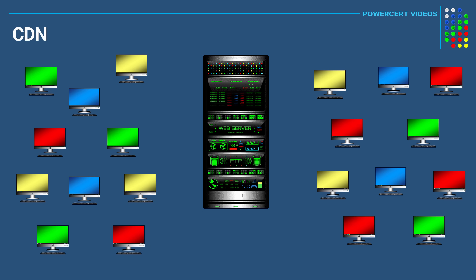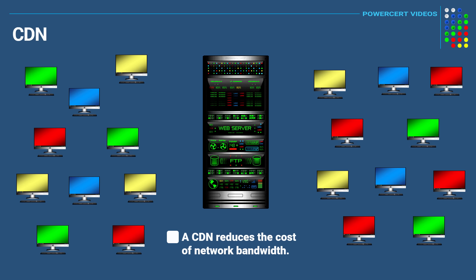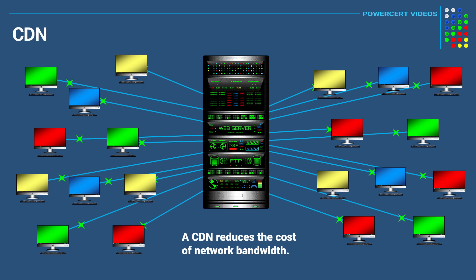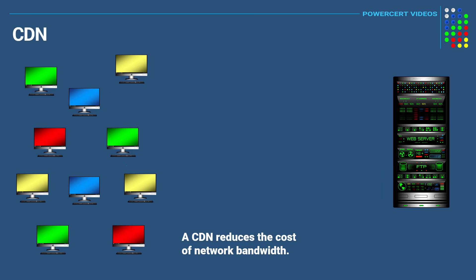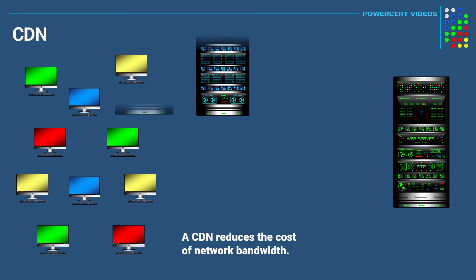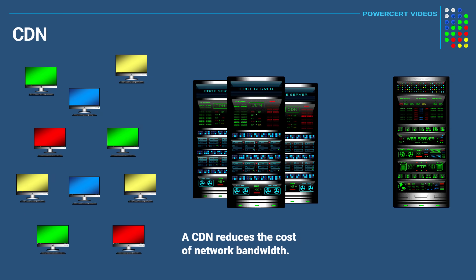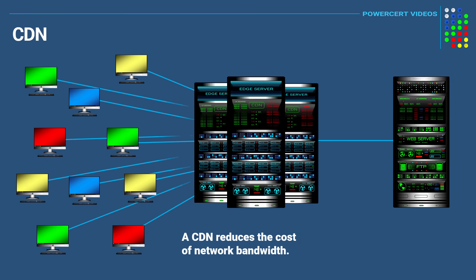In addition to speeding up websites, a CDN can also reduce the cost of network bandwidth. Because every time a user connects to a website, it uses up bandwidth. And if a business has millions of users visiting their website, the cost of bandwidth is a significant expense. But by using a CDN, it will reduce the number of users connecting directly to the origin web server.